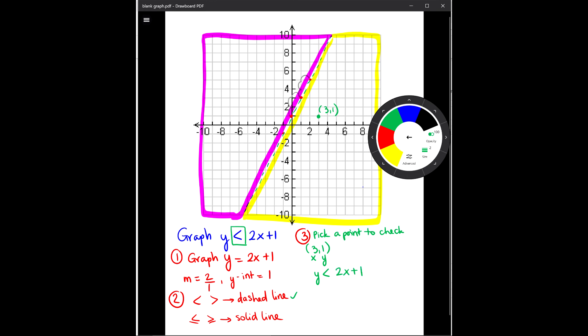And based on the point I pick, I have y is 1 less than two times x, which is 3 from the point I pick, plus 1. And I have 1 less than 3 times 2 is 6, plus 1 is 7. So the whole sentence is 1 is less than 7. It works. So put a check.